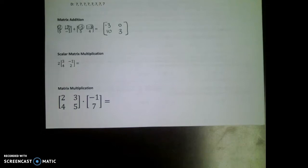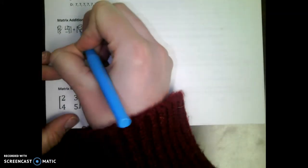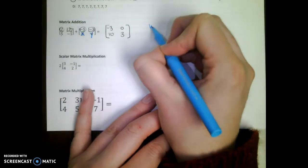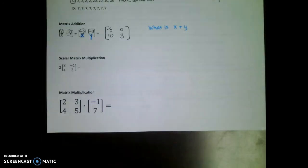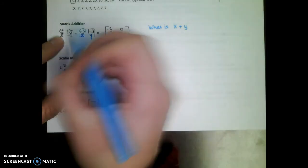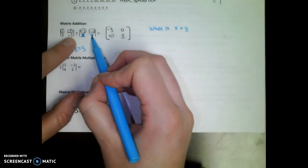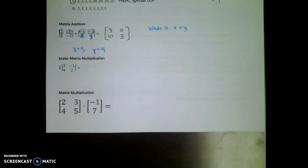Now here's what the ACT might do. They would give you this fully done matrix problem. But instead, they might have an X in place of the five and a Y in place of the four. And then they would ask you something like, what is X plus Y? Well, if you understand what's going on with the matrix addition, you could be like, okay, five plus X gives me ten, so X must be five. Negative one plus Y gives me three, so Y must be four. Five plus four is nine. So my answer would be nine.